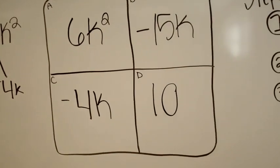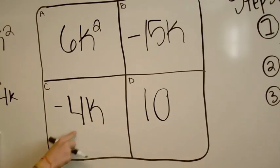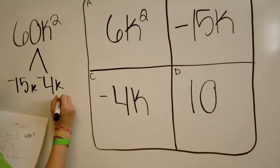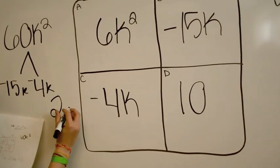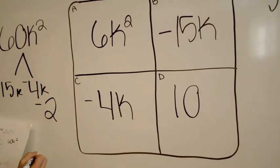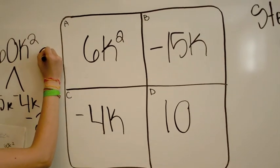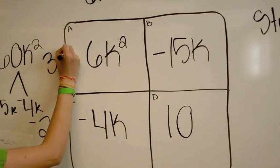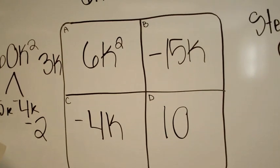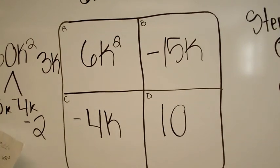Now we need to find a common multiple of box D and box C. The common multiple here would be negative 2. Now we need to find a common multiple for box B and box A. The common multiple is going to be 3K.